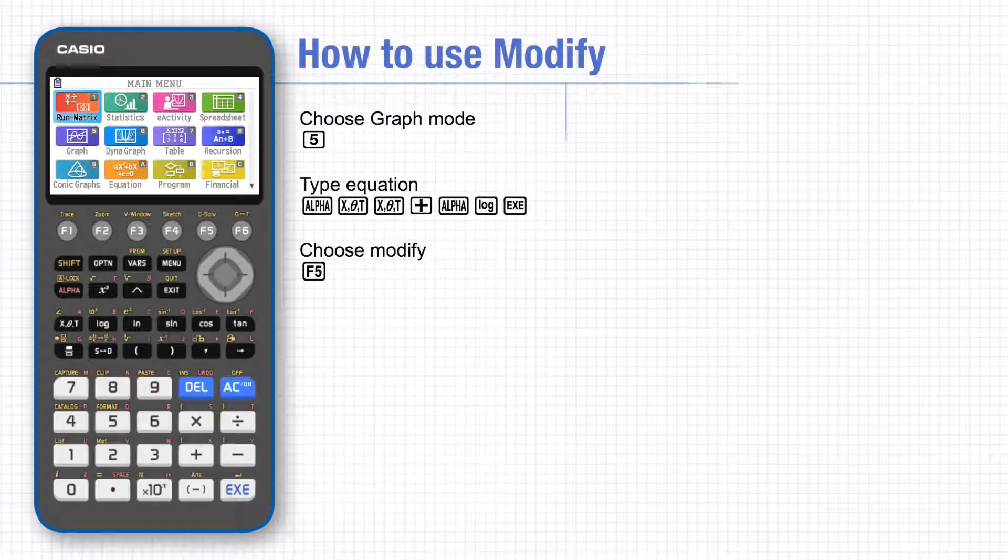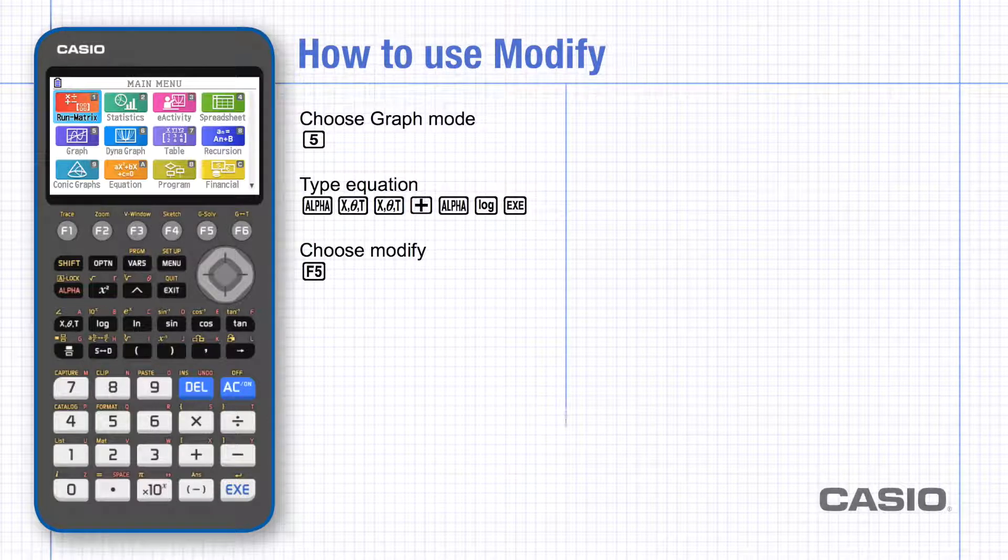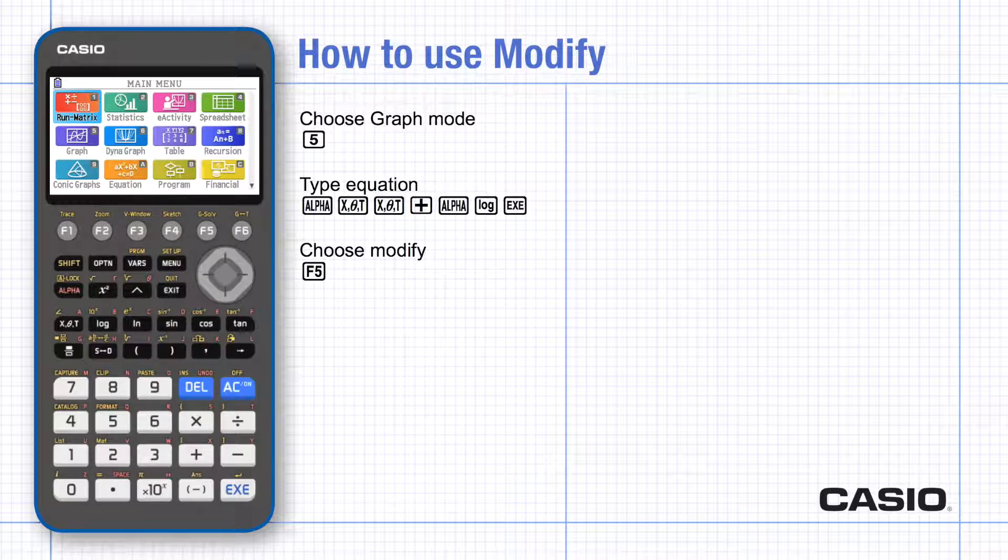In this tutorial we'll be looking at modify in the graph menu. This enables us to explore equations which contain unknown coefficients whose values can be modified. In modify, the ordinary graph drawing tools may not be active, so we'll also look at how to return to the draw menu to use zoom or g-solve and so on.